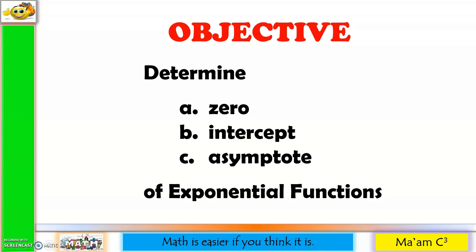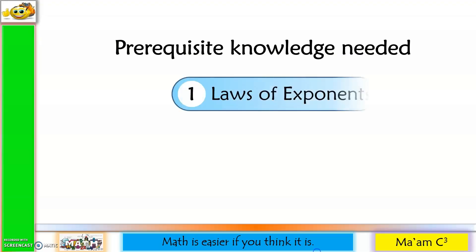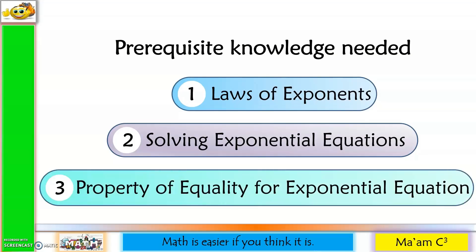Our objective for this lesson is to determine the zero, intercept, and asymptote of exponential functions. Prerequisite knowledge needed for this lesson are laws of exponents, solving exponential equations, and the property of equality for exponential equations.